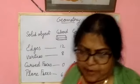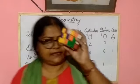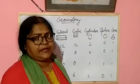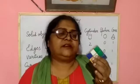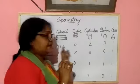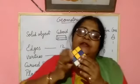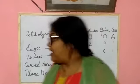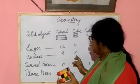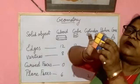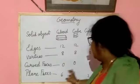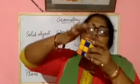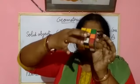Next is the cube. When you trace this cube, what plane figure will you get? You will get a square. In this cube, the same thing: 12 edges, 8 vertices, no curved face, and 6 plane faces — 1, 2, 3, 4, 5, 6.